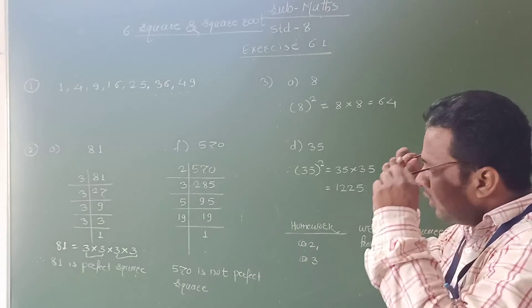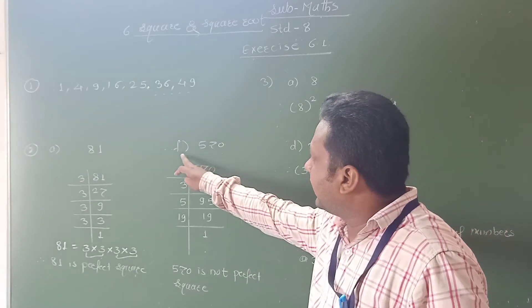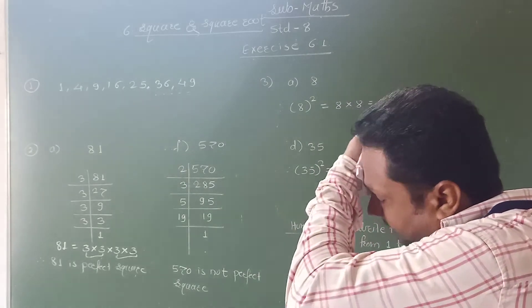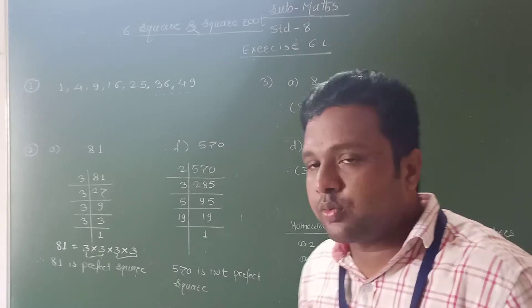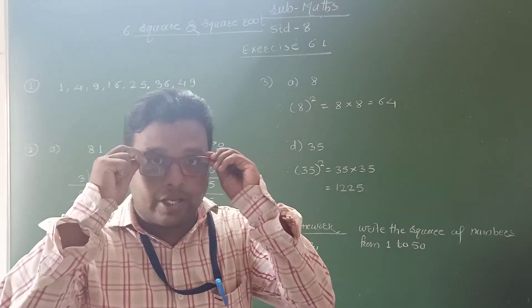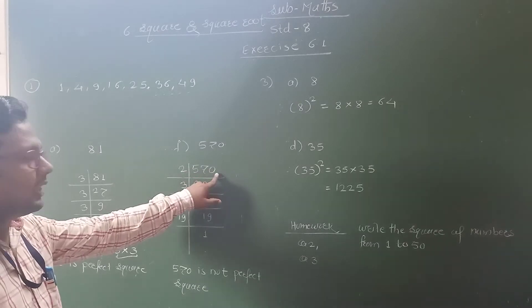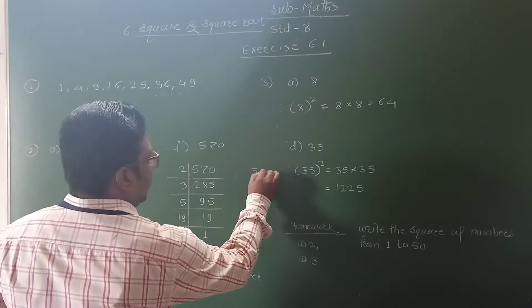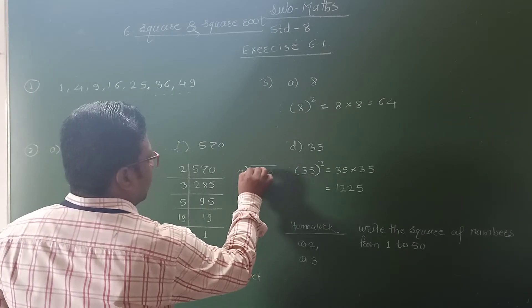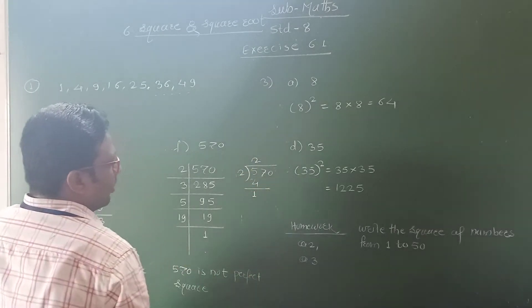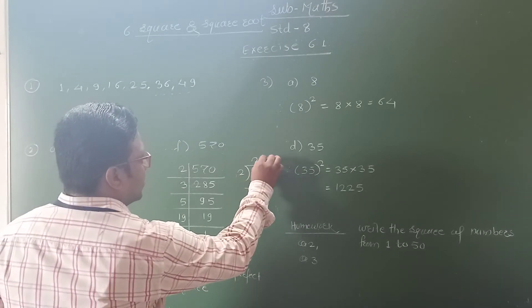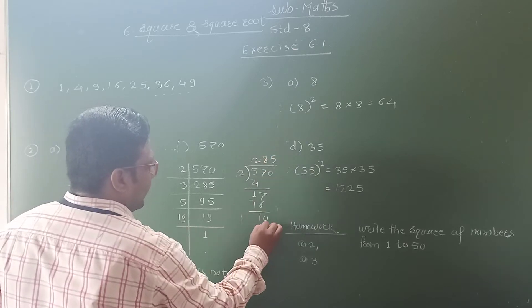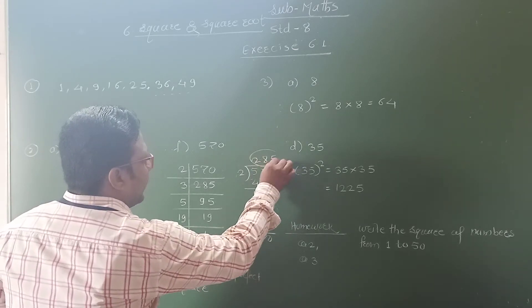Now see the next example from question number 2. The number given is 570. To identify whether this number is a perfect square or not, we find out the prime factors. 570 is divisible by 2. 570 divided by 2, here we get 285.